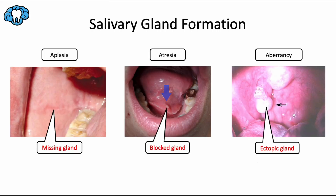Salivary glands develop from ectodermal tissue at around 6 weeks in utero. Unfortunately, things can and do go wrong with formation of the salivary glands during embryogenesis.